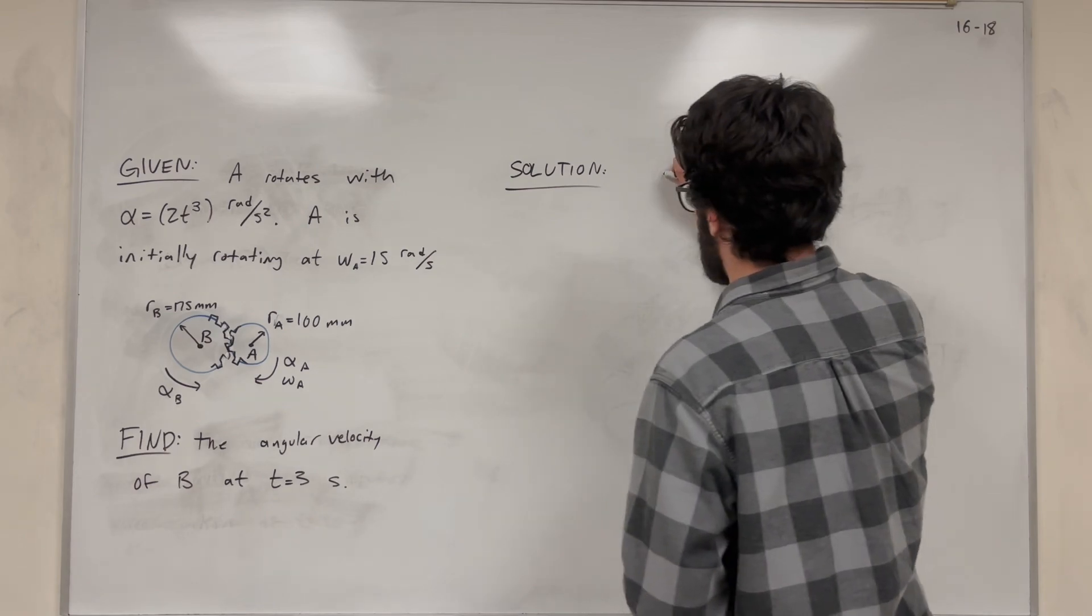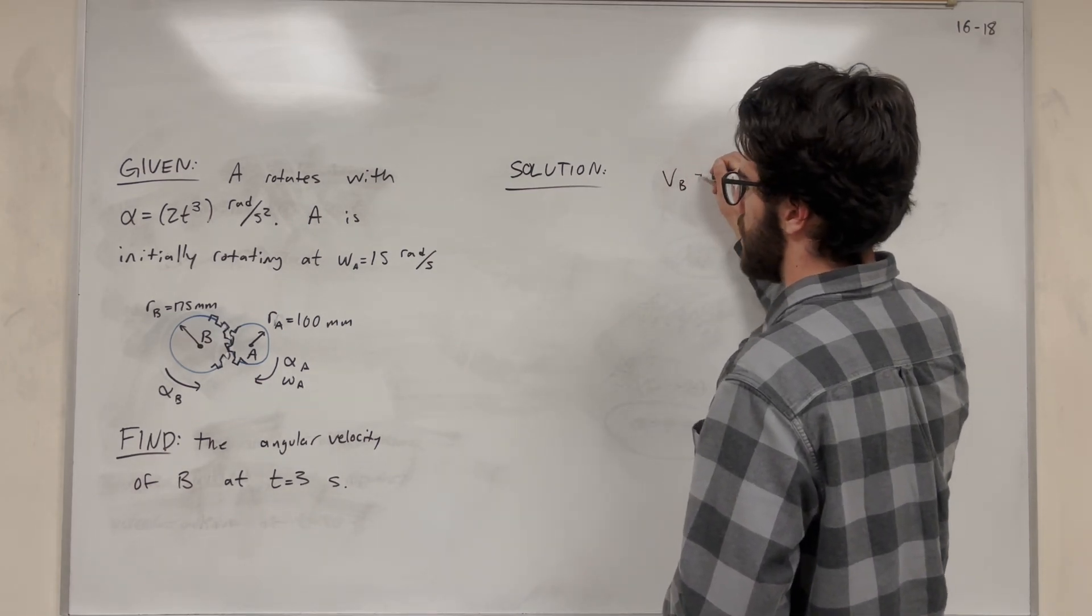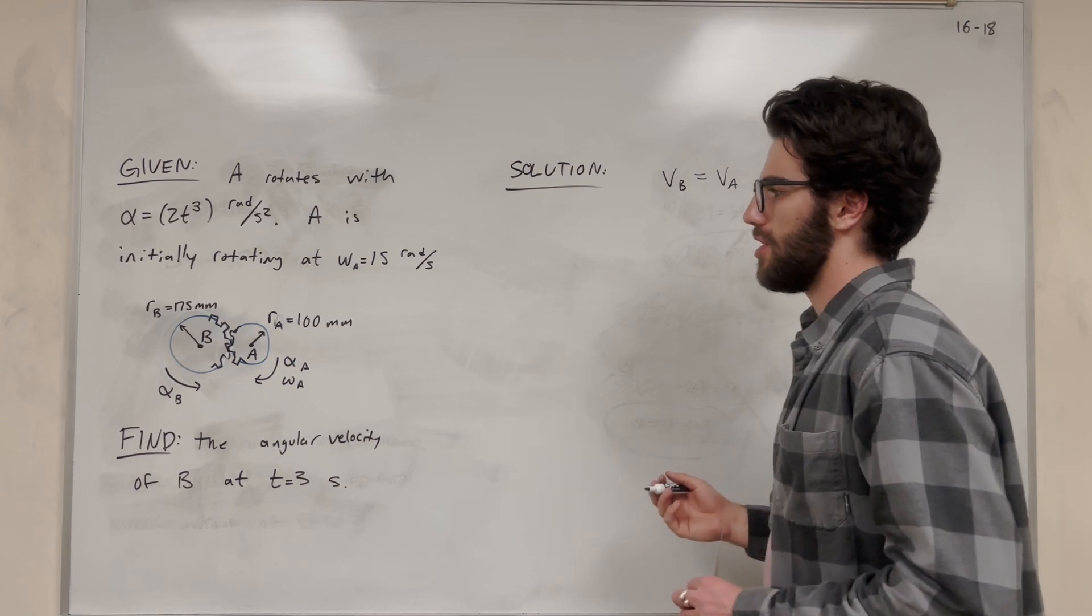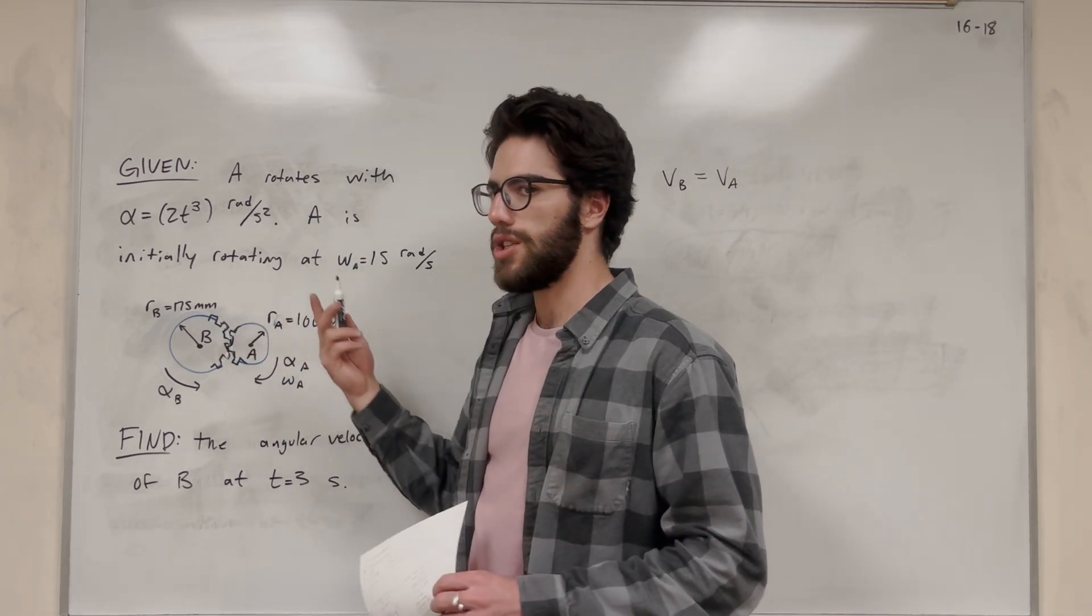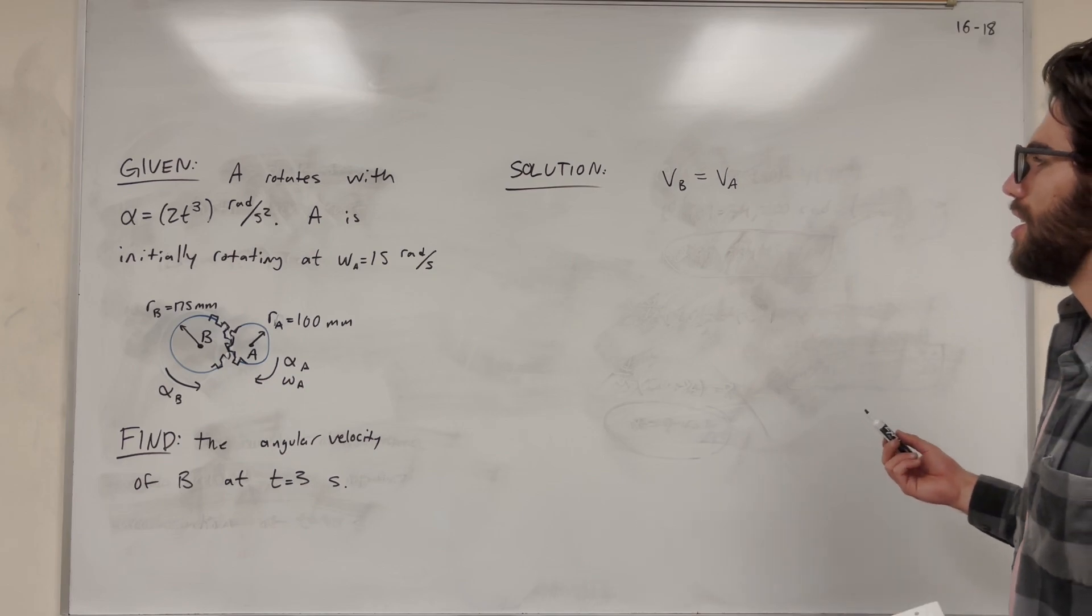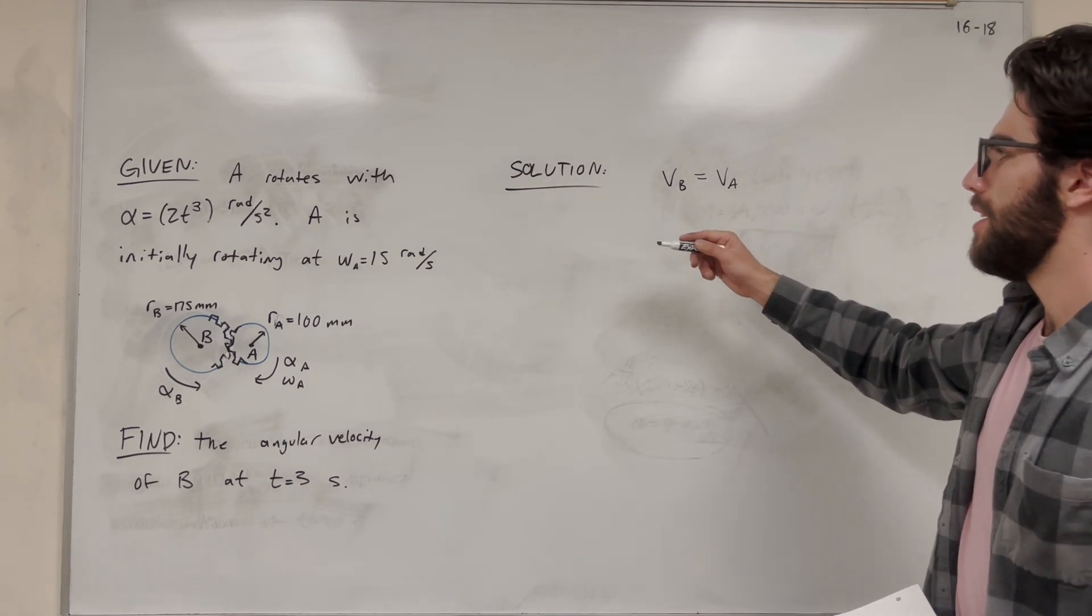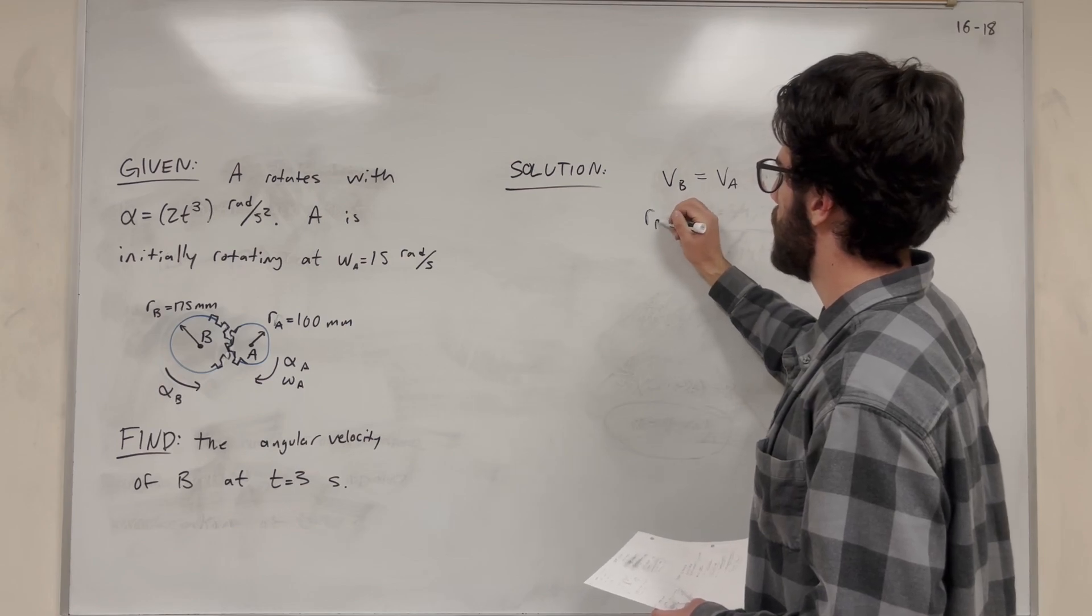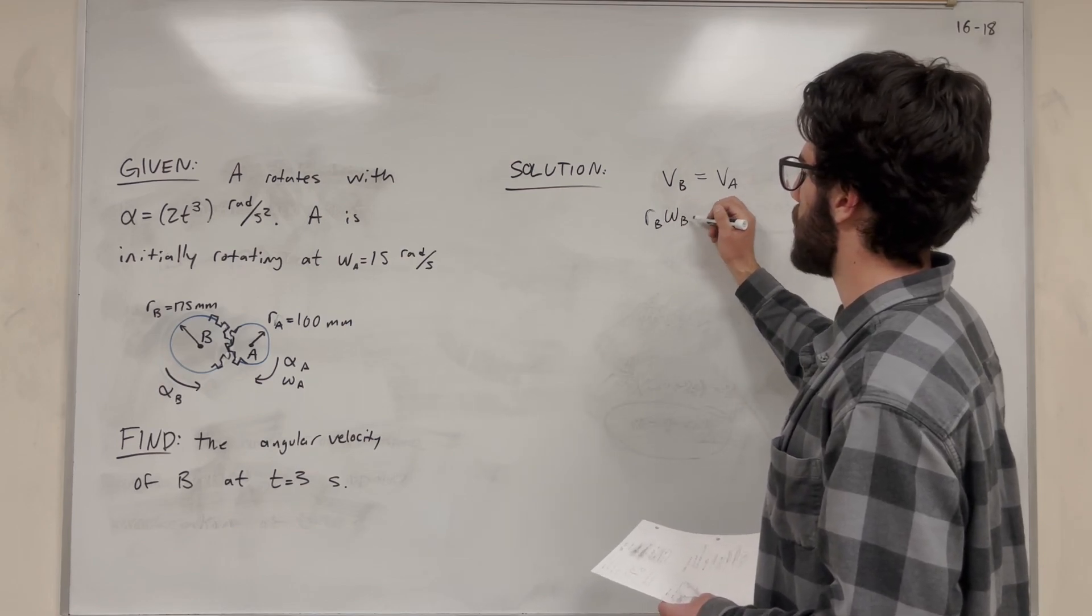So we know that the linear velocity of B at the surface has to be the same as the linear velocity of A at the surface. So how can we relate this to angular velocity and angular acceleration? Well, we know that linear velocity is equal to the radius of that circle times the angular velocity of that circle.